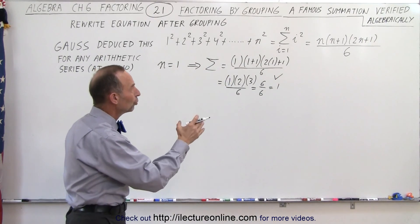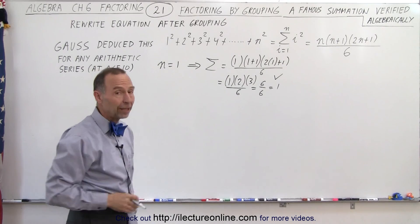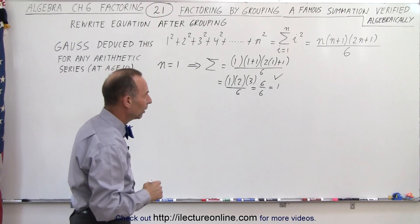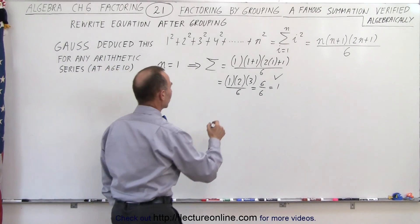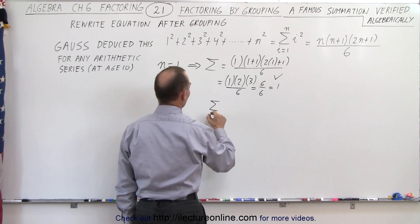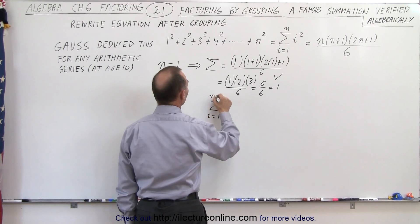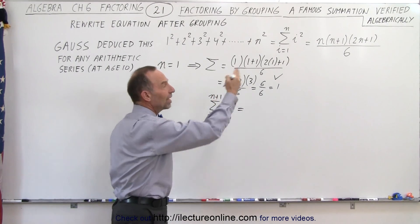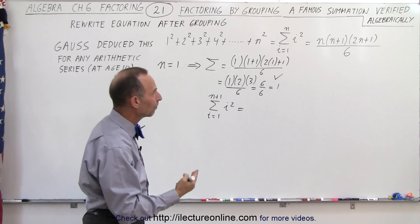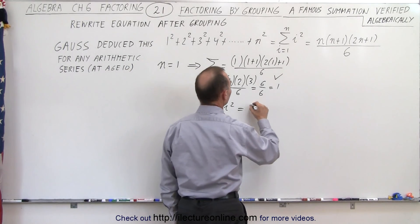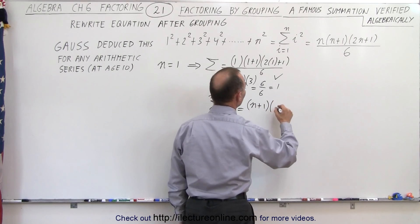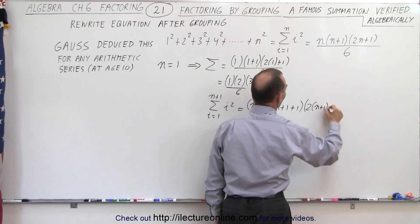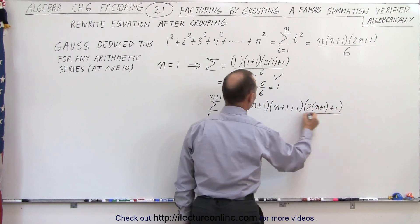So now let's assume that it's true for n equals n. All we have left to do is show that it's true for n equals n plus 1. So what we're going to do now is take the summation from i equals 1 to n plus 1 of i squared, and that should therefore equal the same equation but with every n replaced by n plus 1. So that should be n plus 1 times n plus 2 times 2 times n plus 1 plus 1, all divided by 6.